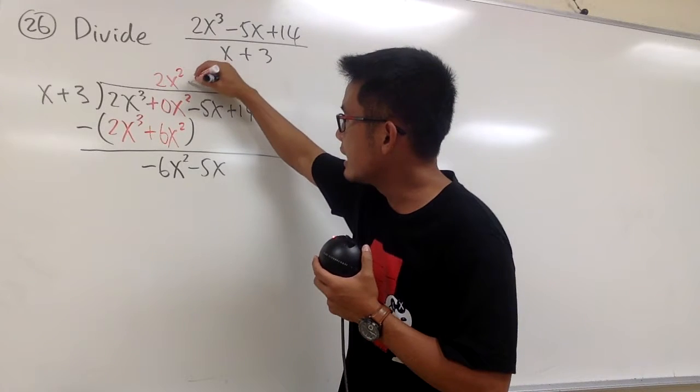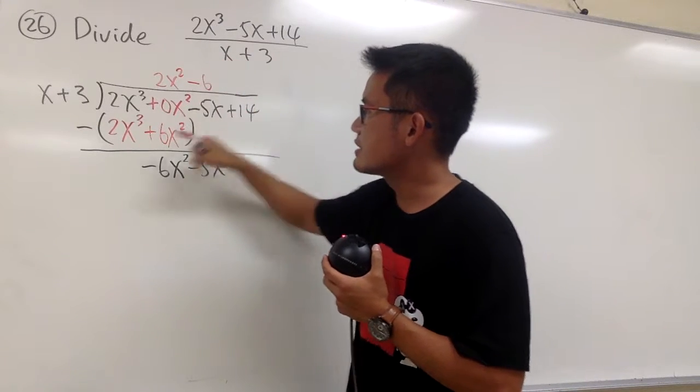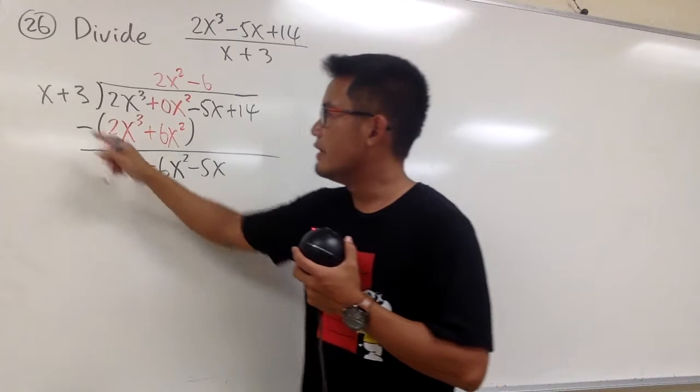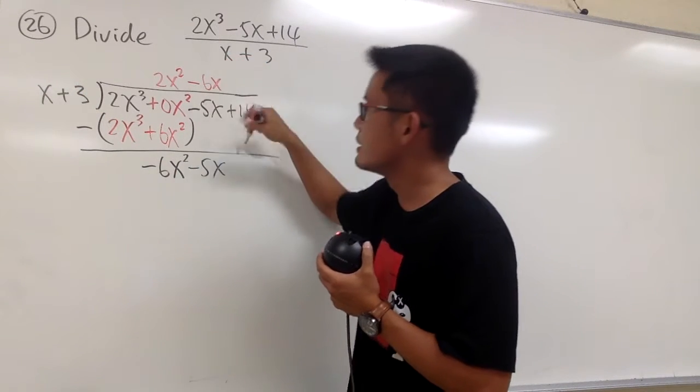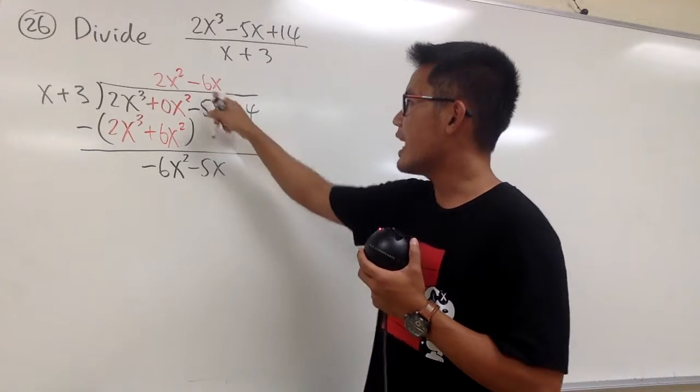Well, I just need to have a negative 6. Because negative 6 times 1 will give me negative 6, right? And this is x to the first power already. I just need to have x, so I can produce the x squared.